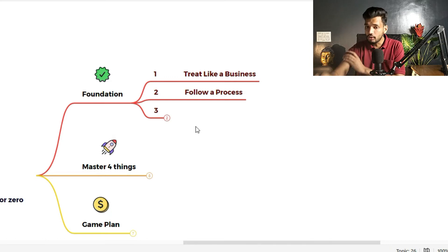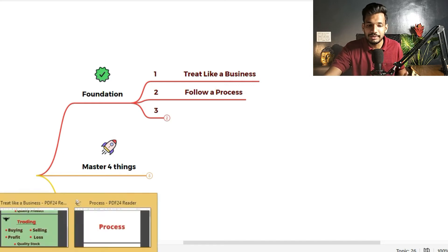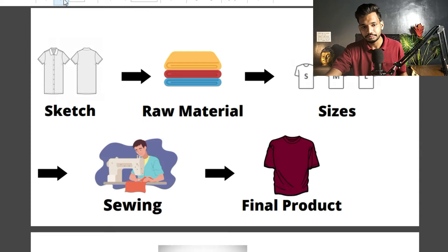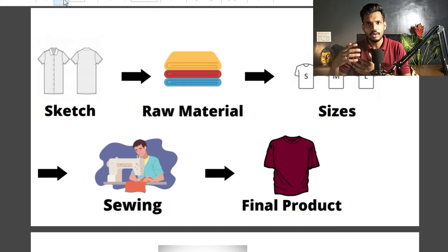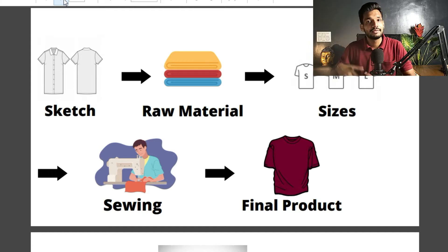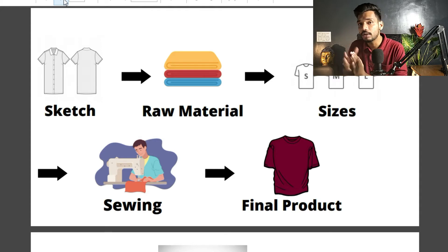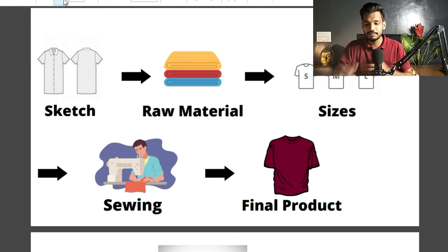Second foundation: follow a process. Everything in this universe has a process; nothing is possible without a process. For example, take any manufacturing or fashion design company. First they create a sketch, then prepare raw material, good quality cloth and thread, then they look at different sizes — small, medium, large — then they do the stitching and sewing, and finally a finished product like a T-shirt is ready. This is a step-by-step process.